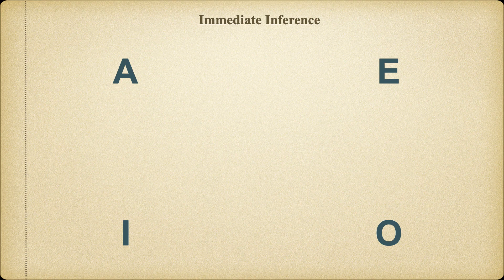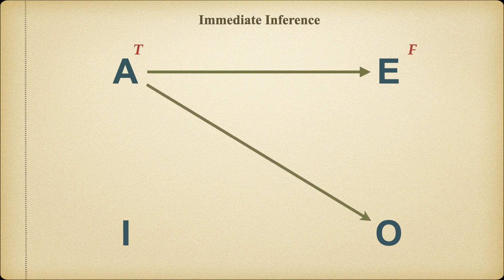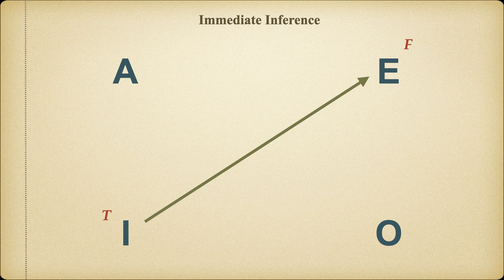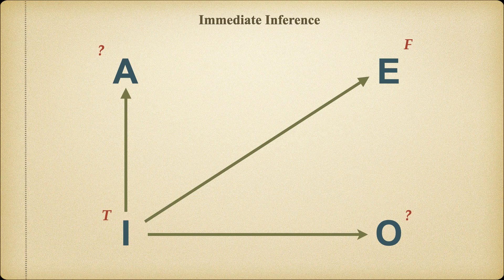We also learned how these relationships allow us to make immediate deductive inferences based on assuming a truth value assignment for any one of the propositions on the square. So if we assume, for example, that the universal affirmative is true, we can make immediate inferences about the truth value of the universal negative, the particular negative, and the particular affirmative in virtue of the contrary, contradictory, and subcontrary relations respectively. Of course, we will not always be able to determine the truth value of every proposition. We know that in subalternation, the truth of a particular claim does not imply the truth of the universal, nor would the truth of the particular affirmative imply a truth value for the particular negative — so in this case, A and O would remain logically undetermined.